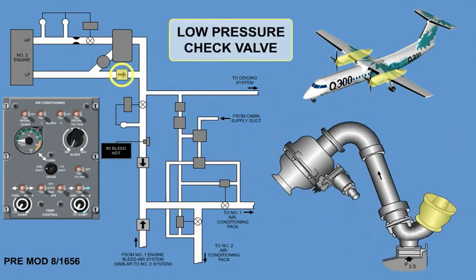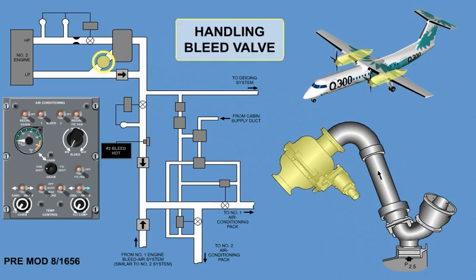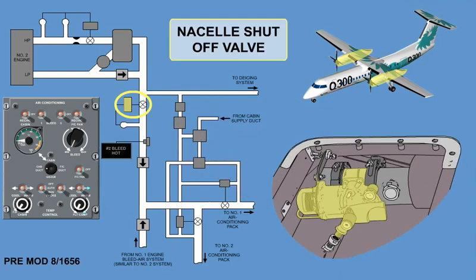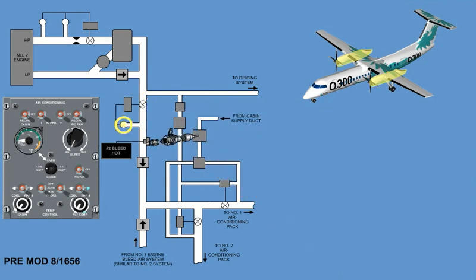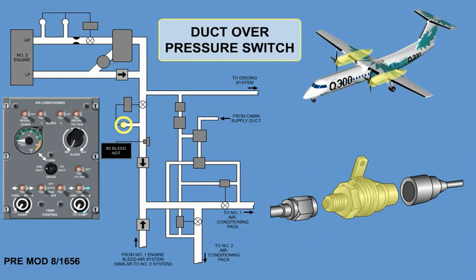It also includes a low-pressure check valve, a handling bleed valve, a nacelle shut-off valve, and a duct overpressure switch.